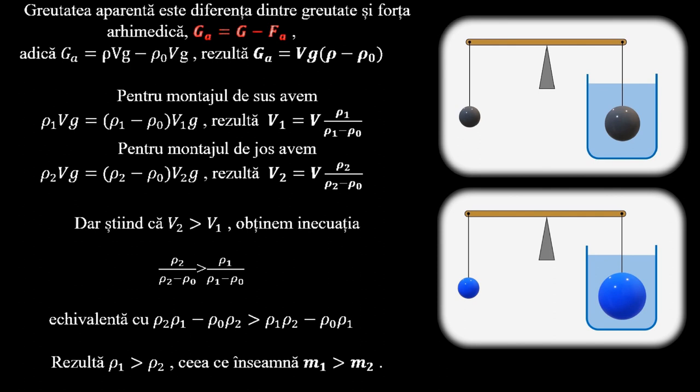Care este echivalentă cu ρ2·(ρ1 - ρ0) > ρ1·(ρ2 - ρ0), din care rezultă ρ1 > ρ2, ceea ce înseamnă M1 > M2.